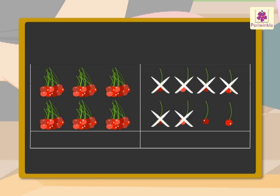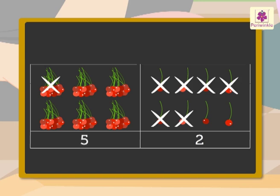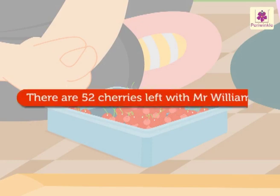To subtract, we first cancel six ones from eight ones, which is equal to two ones. Then we cancel one ten from six tens, which is equal to five tens. So we get the answer as five tens and two ones, which is 52. Hence there are 52 cherries left with Mr. William.